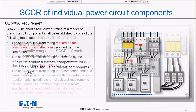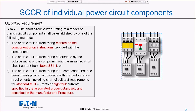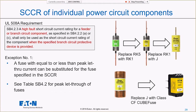Step 1A: identify all component short circuit current ratings of each branch device. I can use the rating marked on the instructions, the default rating from table SB 4.1, or the high fault rating if I'm using the specified upstream overcurrent protective device. The basic and default ratings will be around 5 to 10KA — I'm permitted to use them but probably don't want to. Step 1B — determining if my branch component SCCR can be raised using feeder components — is what we'll spend the most time on.